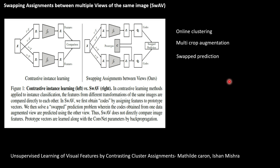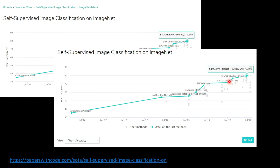As shown on the Papers with Code website, right now SimCLR version two is ranked number one in top-1 accuracy, and BYOL is second, which is about 0.2% less.